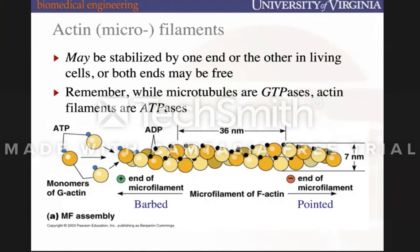Our next and final cytoskeleton protein is the actin filaments, or microfilaments — typically we just call these actin filaments. One way they differ from tubulin filaments is that actin filaments can be stabilized by one end or the other, or both ends can be free, so you'll typically see growth at both sides. However, one end typically undergoes polymerization a little bit faster.